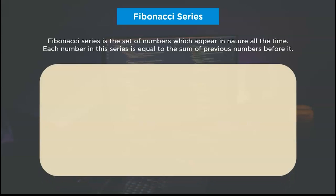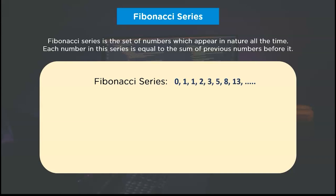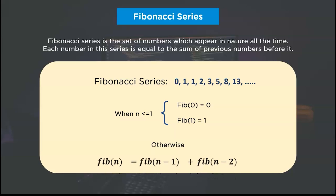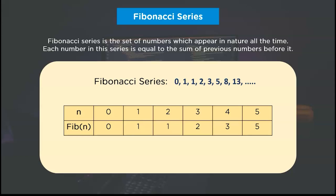The sequence goes like 0, 1, 1, 2, 3, 5, 8, 13 and so on. Let's say N is the iterator element to calculate consecutive Fibonacci numbers. For the first two iterations — 0 and 1 — the resultant Fibonacci values will be simultaneously 0 and 1. Otherwise, the Fibonacci values will be the sum of the previous two Fibonacci numbers in the sequence. That means when the iterator element N becomes 2, the consecutive Fibonacci number is the sum of 0 and 1, so the resulting Fibonacci number is 1.